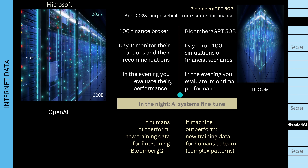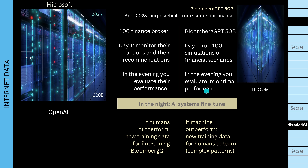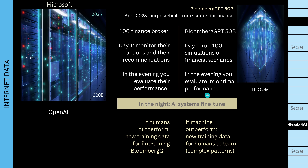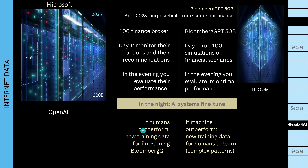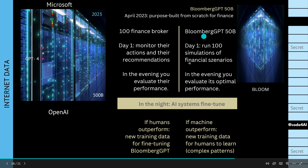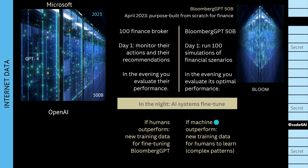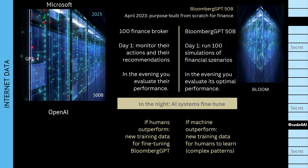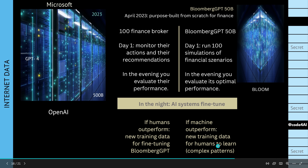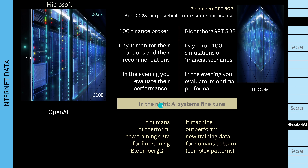At night you fine-tune the AI system with that day's data so the system learns what happened in the real world, and maybe it runs 100 synthetic simulations based on BloombergGPT's knowledge. It's a win-win: if humans outperform, you have new training data to fine-tune BloombergGPT. If the machine outperforms, you have new training data for humans to learn from — uncovering complex data patterns. It's a win-win situation if you have your own AI system.